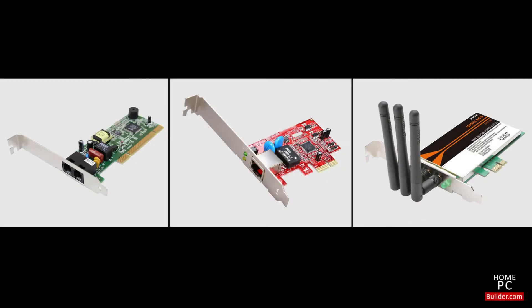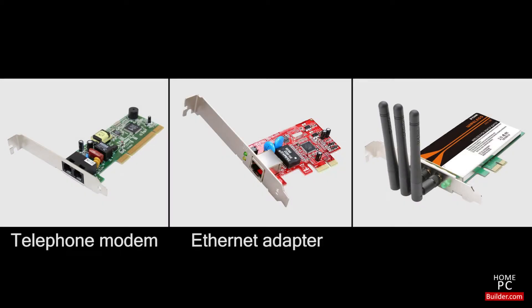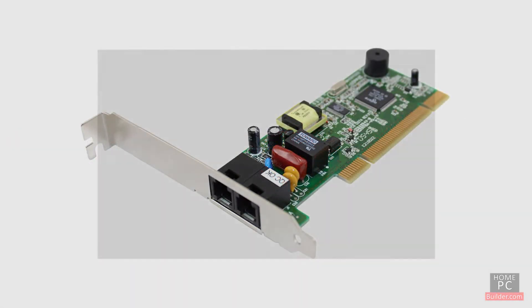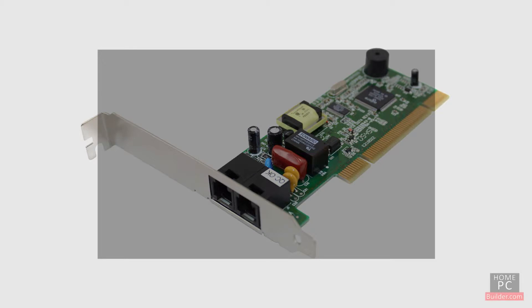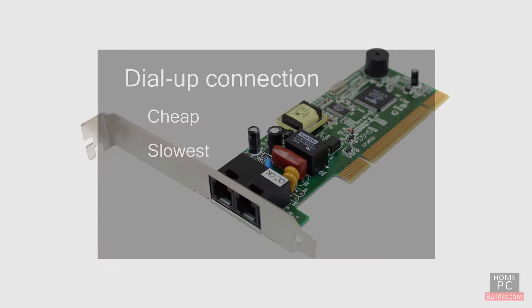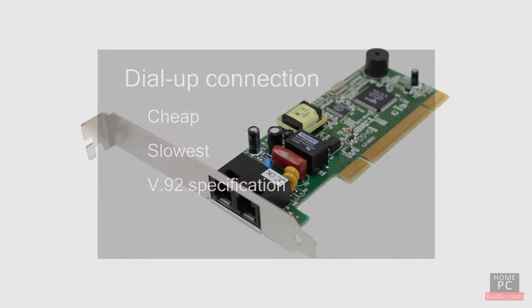In order to connect to the Internet, you'll need a telephone modem, an Ethernet adapter, or a wireless adapter in your computer. A telephone connection to the Internet is known as a dial-up connection. This is the cheapest way to connect, but it's also the slowest. For a telephone line modem, look for the V.92 spec, which will make sure you get the fastest connection available.